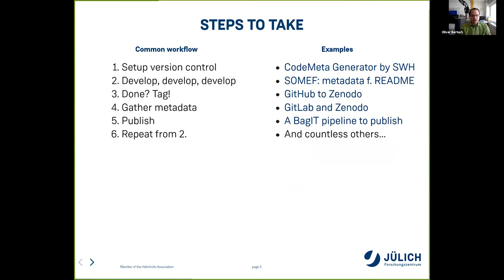How hard can it be to publish software code? First, you set up version control, do some development, and hopefully create a tag. We have good dev tools for this: Git, GitHub, GitLab. But then comes the tough part: adding metadata and depositing it. There's a growing number of tools that try to help with those steps, and there's some automation available, but let's try to make it easier and more aligned for developers, especially research software engineers.